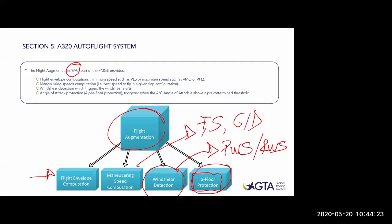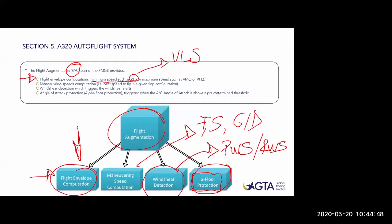This alpha floor function belongs to the flight envelope computation of the FAC. Flight envelope computation also computes speeds such as VLS - Lowest Selectable Speed - the lowest speed I can set for the aircraft to fly. Even if I command zero knots, she will never fly zero - she will always fly VLS, which is also linked to the alpha floor protection.